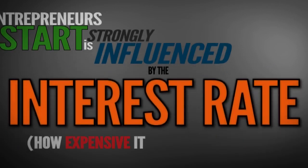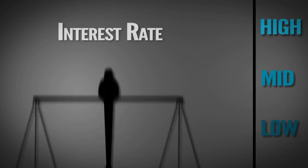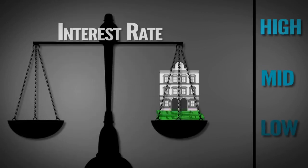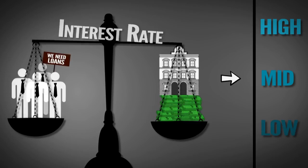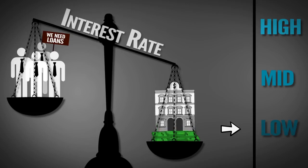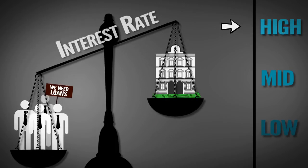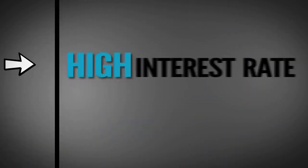It turns out, which projects entrepreneurs start is strongly influenced by the interest rate, how expensive it is to borrow money. In a free market, interest rates are determined by the balance between savers and consumers. The more people save, the more funds become available to lend, and the lower the interest rate. The less people save, the less funds available to lend, and the higher the interest rate.